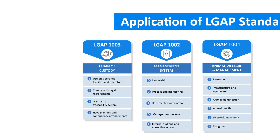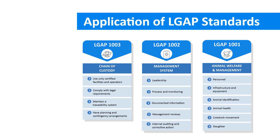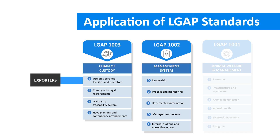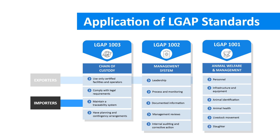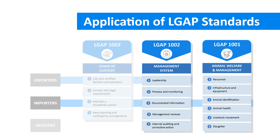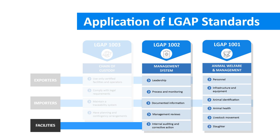However, not all standards and requirements apply to all operators or facilities. Exporters must meet LGAP 1003 and 1002. Importers must meet all three standards; however, they don't have to meet the entire list of requirements in each of these standards. Facilities must meet LGAP 1002 and 1001.